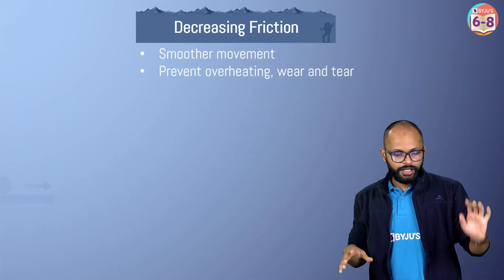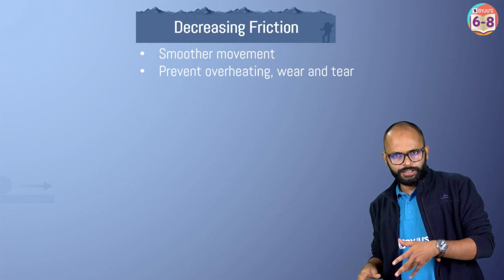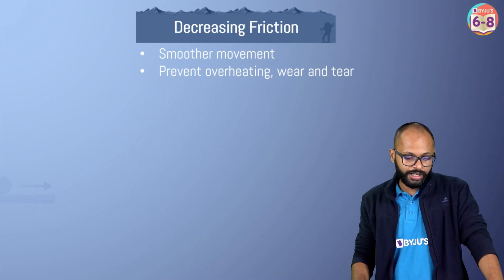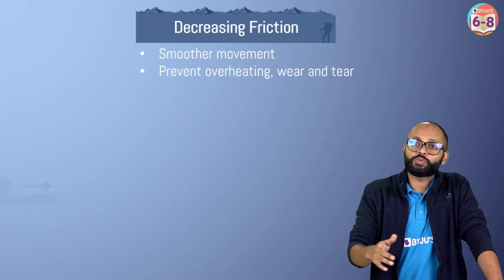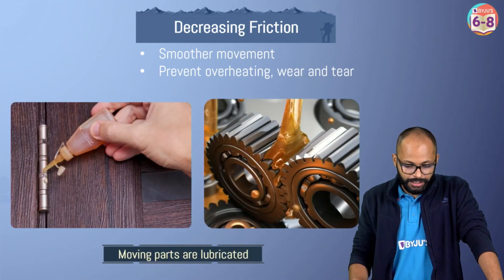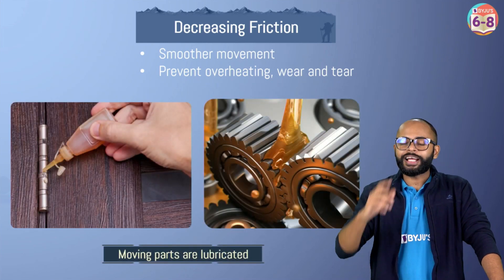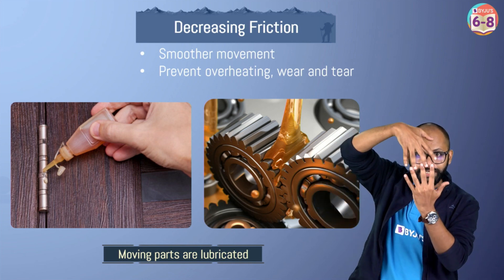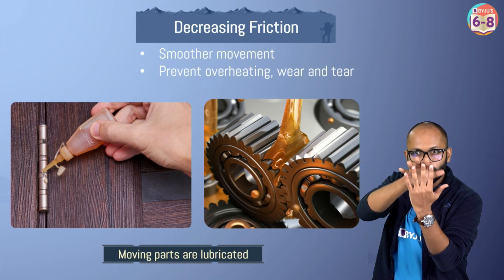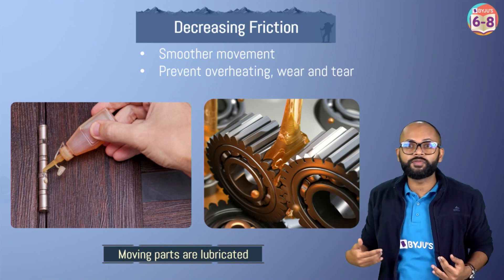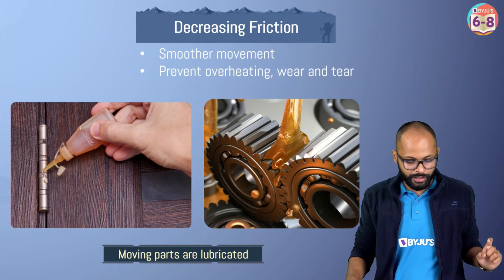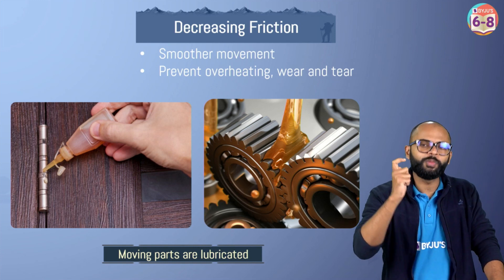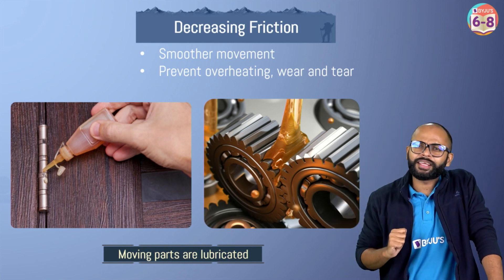Now, when do we decrease friction? When friction is causing problems - when you want smoother movement and want to prevent overheating and wear and tear, that's when you decrease friction. How? Lubrication. What does a lubricant actually do? It fills the gaps between the interlocking surfaces, making interlocking difficult - that's how friction reduces. That's why moving parts are lubricated so friction decreases and smoother movement is possible.